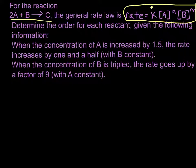Now instead of having a table of data, this time we're given some information about what happens to the rate when we change these concentrations individually. So our first piece of information is that when we increase the concentration of A by one and a half, the rate increases by one and a half.